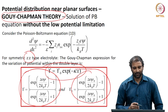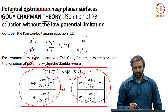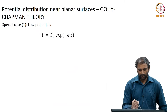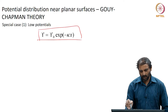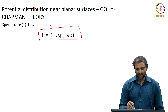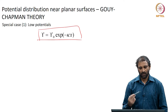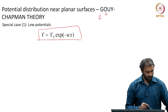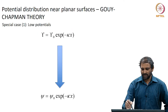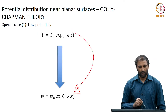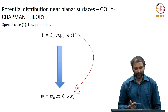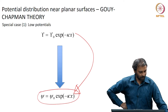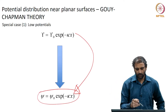Now what we will do is try and look at simplifying this general expression to some specific cases. We know that z_gamma is gamma_0 times exponent of minus kappa x, which is valid for any potential as long as the electrolyte is z-to-z. This expression can be simplified to psi equals psi_0 times exponent of minus kappa x for the case of low potential.